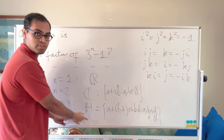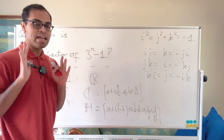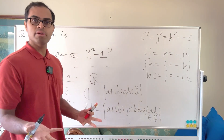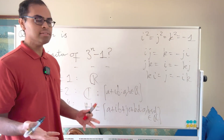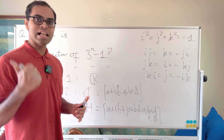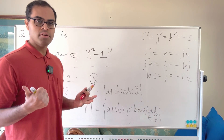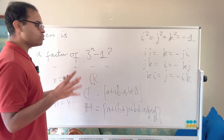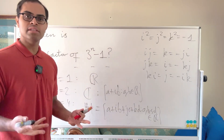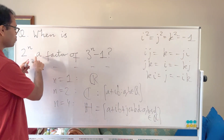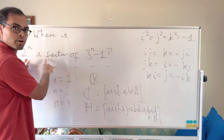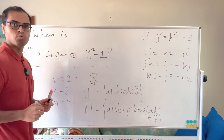The quaternions form what's called a real division algebra, but no other dimensions admit such a system. This can be proved using algebraic topology and K-theory, and it reduces to the statement that the only n for which a real division algebra of dimension n exists are n = 1, 2, or 4 — exactly the n for which 2^n divides 3^n − 1.